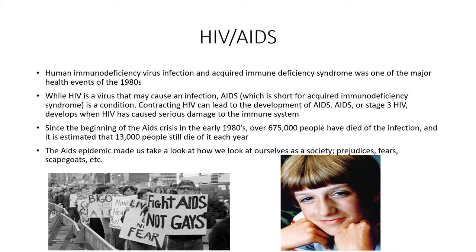Ryan White was a young man who had an operation and received a blood transfusion. Ryan was 13 years old in 1984 when he had this operation. He was from Kokomo, Indiana, and he contracted the AIDS virus due to the blood transfusion. His doctors gave him six months to live. At this time, when you came down with AIDS, it was almost a death sentence. Ryan White became the public face of education about the HIV-AIDS virus. He tried to go back to school, but because of stereotypes, prejudices, and fears, people thought you could contract AIDS just by being in the same room with someone — breathing their air or sitting in their seat. The school board did not allow him to go back to school.